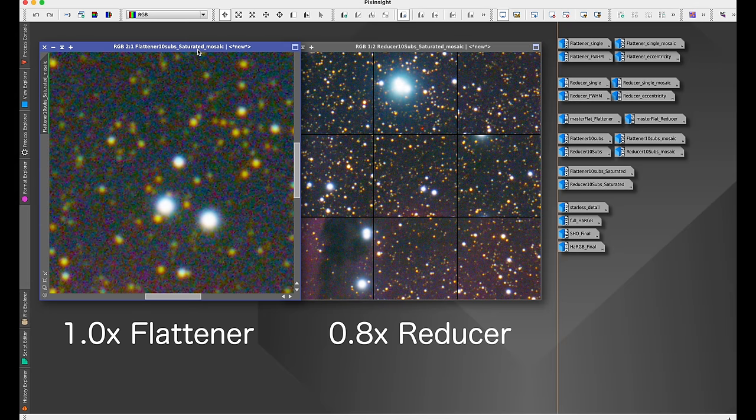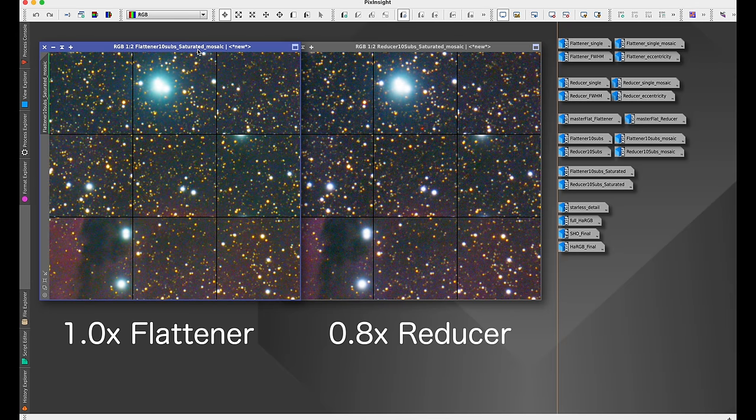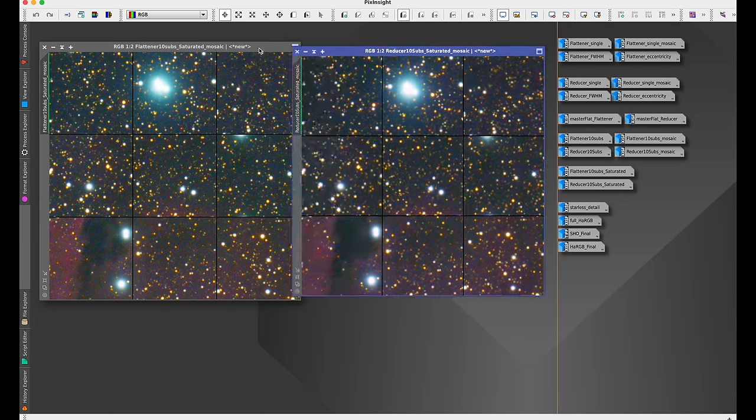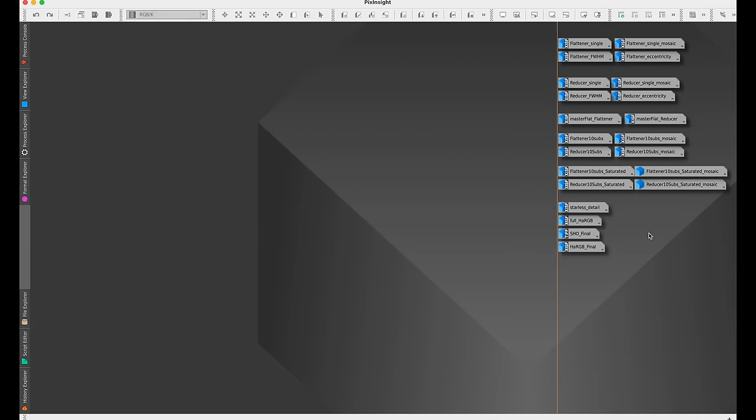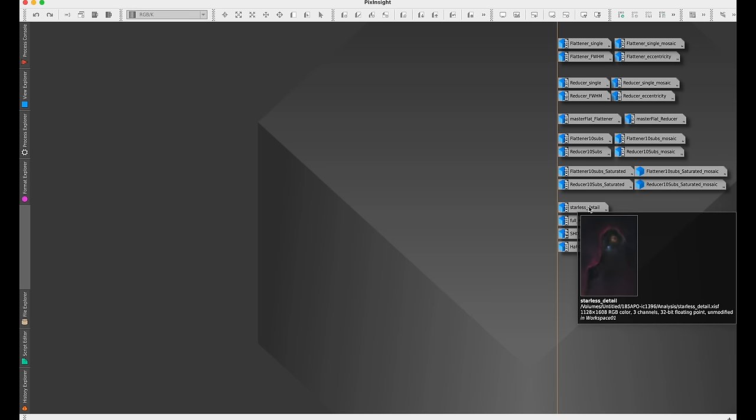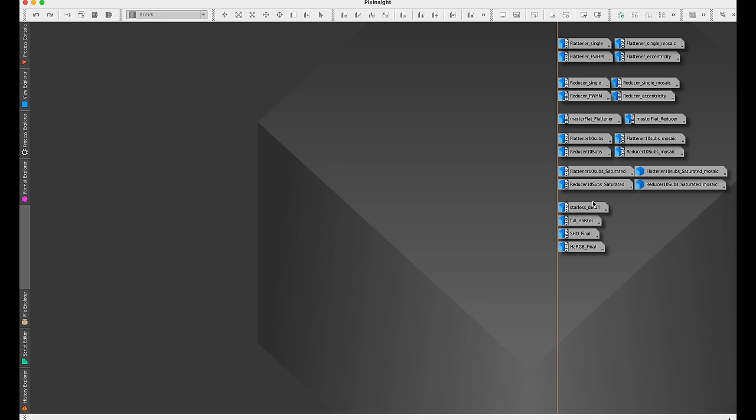This is an extreme test though. I want to make that clear. If you're not someone who really saturates your stars and really wants to just get those really colorful stars, you might never even see this. But it is a display of chromatic aberration if you really want to pixel peep the data there. That's all the imaging tests that I want to show with this telescope. Now I just want to show some of the processed things that I created.